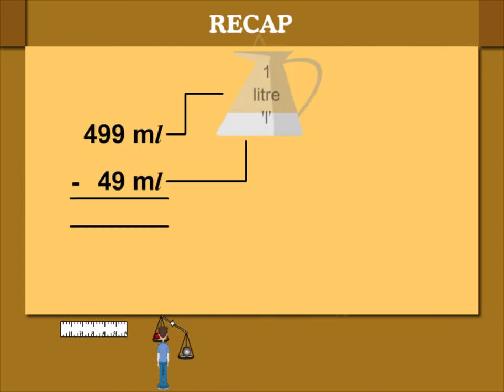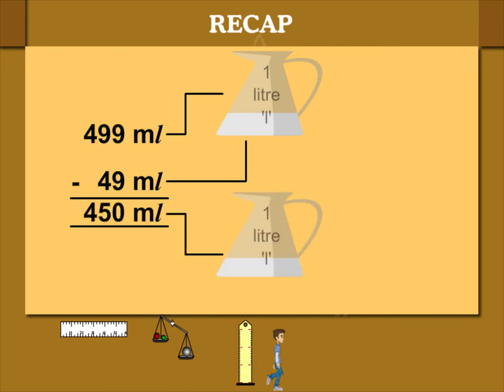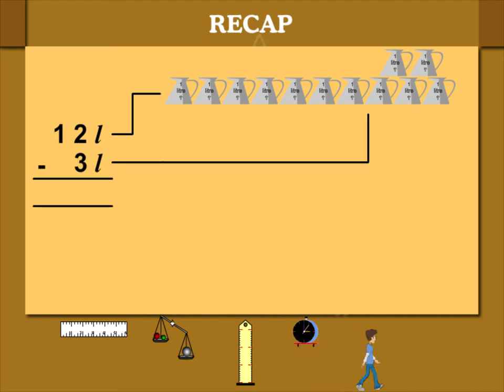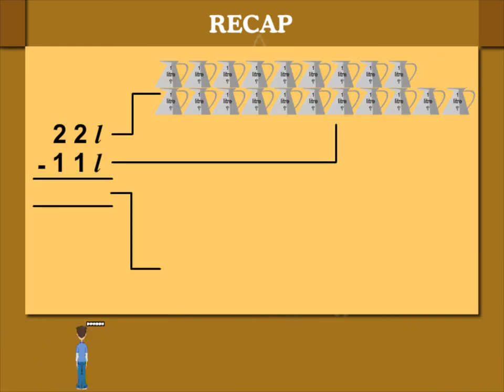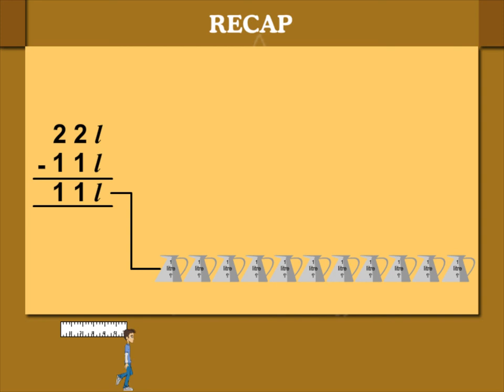If you subtract 49 milliliters from 499 milliliters, you get 450 milliliters. If you subtract 3 liters from 12 liters, you get 9 liters. 22 liters minus 11 liters is 11 liters.